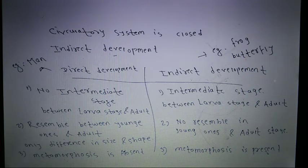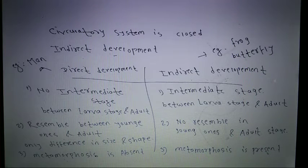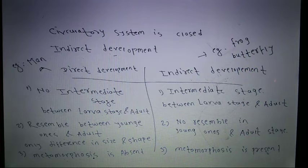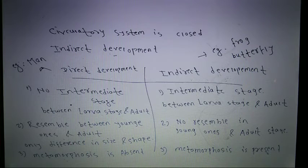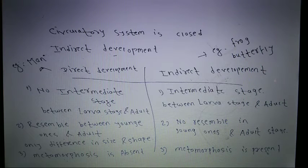Metamorphosis means change of states — for example, larva to adult. Metamorphosis is absent in direct development because there is no intermediate stage. In indirect development, metamorphosis is present. An example of direct development is humans; examples of indirect development are frogs and butterflies.